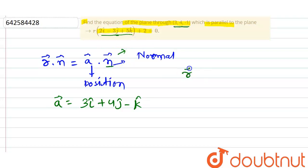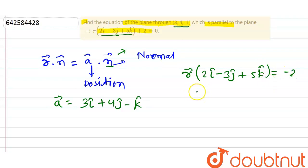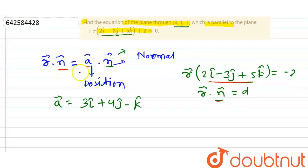The parallel plane is: vector r dot (2î − 3ĵ + 5k̂) = −2. We know that the standard form of the equation of a plane is vector r dot vector n = d. Hence, vector n = 2î − 3ĵ + 5k̂. Now we can find the equation of the required plane by substituting vector n and vector a.